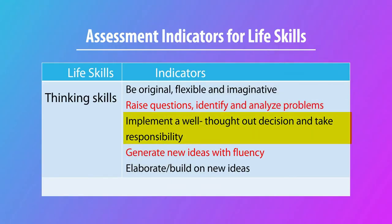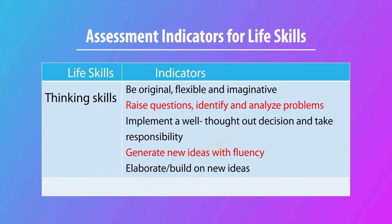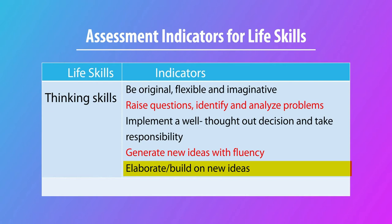Are your learners able to implement a well-thought-out decision and take responsibility? Suppose they are participating in a project or naturalistic inquiry and something is not going as expected — are they able to take responsibility for their mistakes and learn from them? Are they able to generate new ideas with fluency, and if they get a new idea from someone else, are they able to elaborate or build on it? These are indicators that thinking skills are developing.